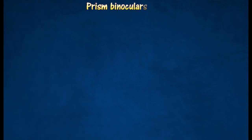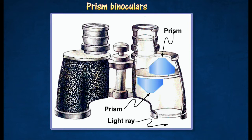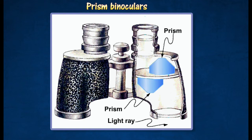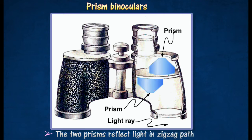The construction of prism binoculars is also based on the effects of a prism on rays of light. The two prisms are arranged in such a way as to deviate the incident rays through 180 degrees. Light rays from a distant object incident normally on the hypotenuse face of the first prism, and strike the other two faces at an angle of 45 degrees. The two prisms reflect light in a zig-zag path, as shown in the diagram.